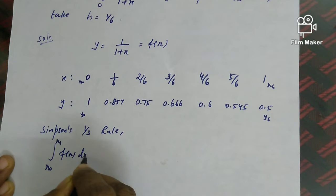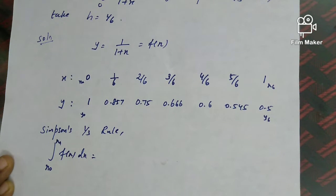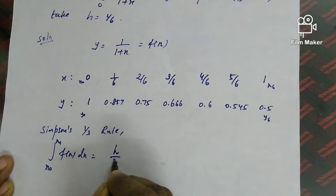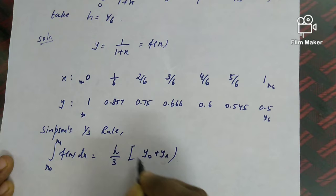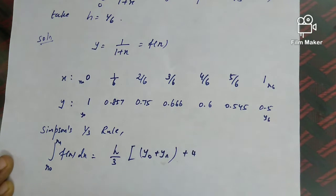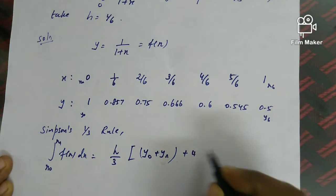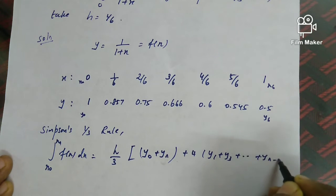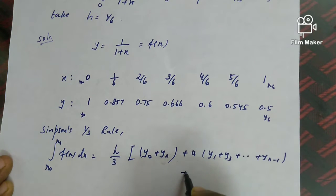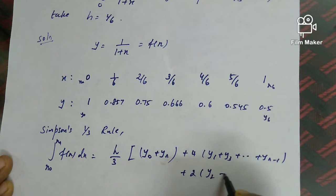Applying the Simpson's 1/3 formula: the integral equals h/3 times [y₀ + yₙ + 4 into odd ordinates (y₁, y₃, yₙ₋₁) + 2 into even ordinates (y₂, y₄, yₙ₋₂)].